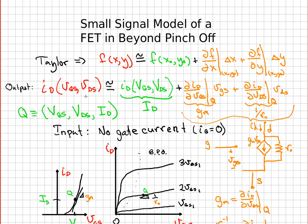So we want to apply that to the drain current for the field effect transistor, which is a function of V_GS and V_DS in general.